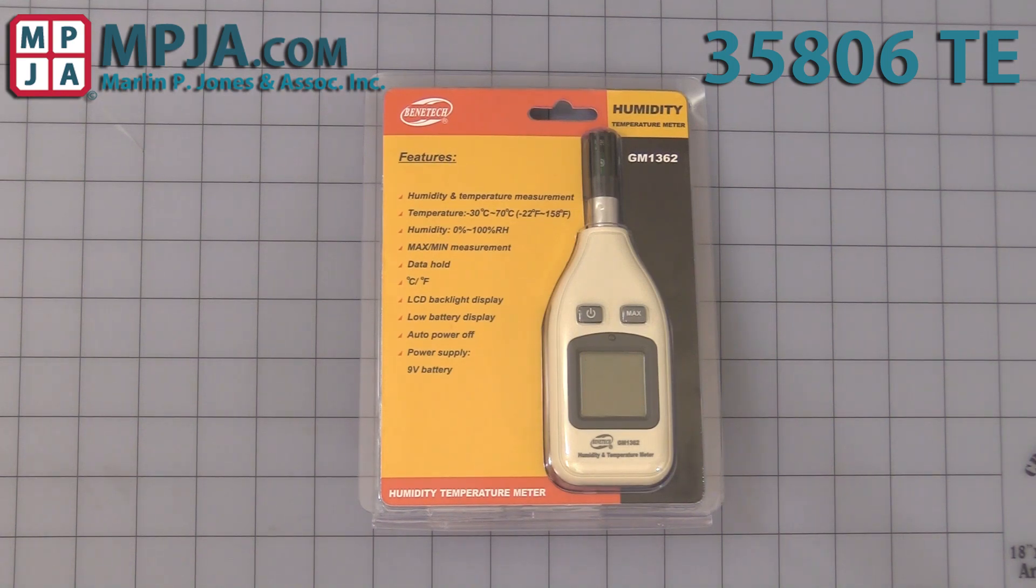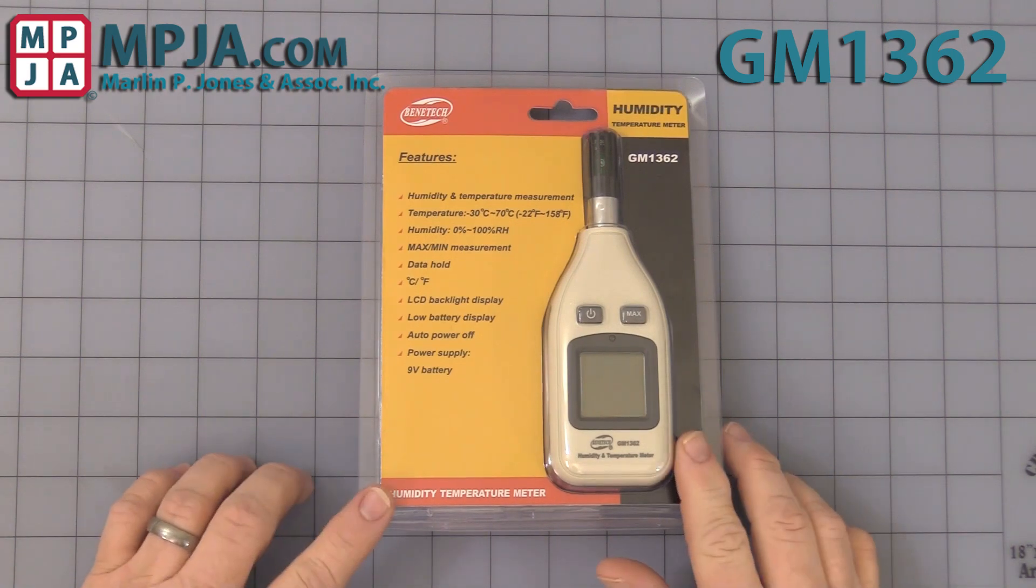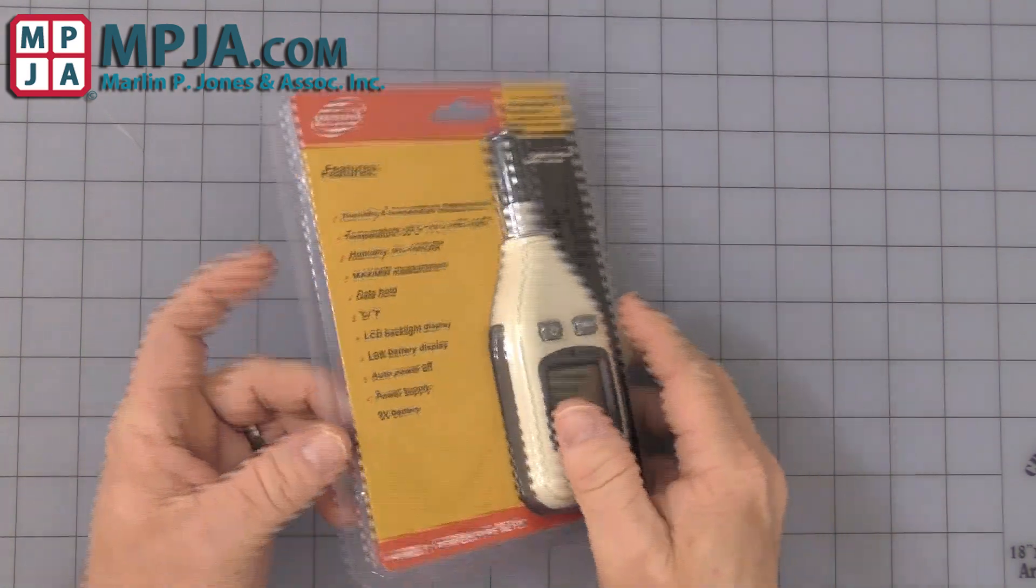Hello. Today's video is on stock number 35806TE or the manufacturer's number GM1362. It will come in a little blister pack like that.